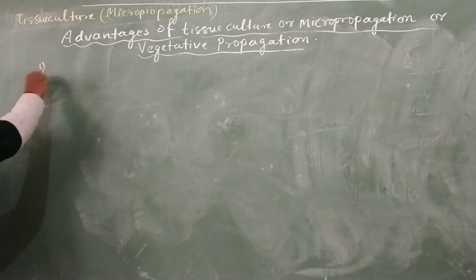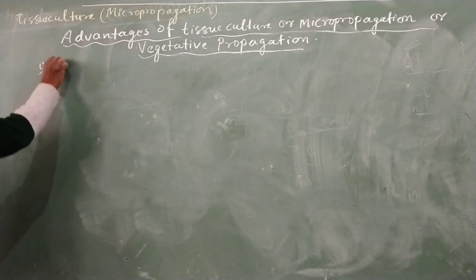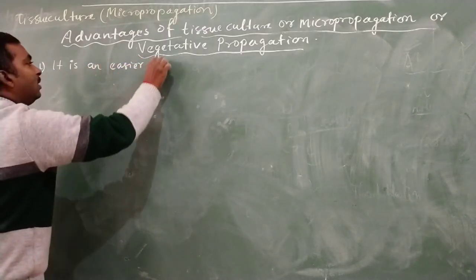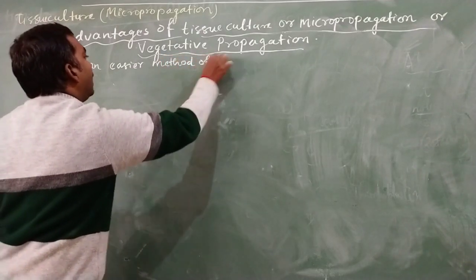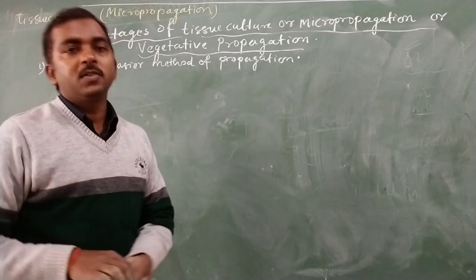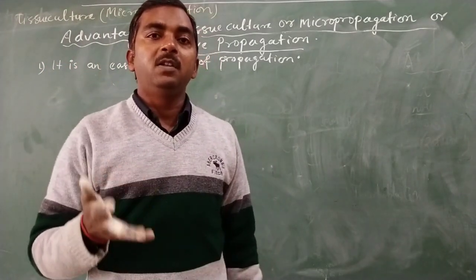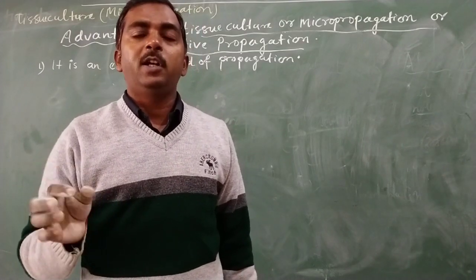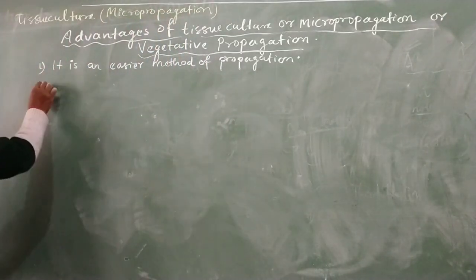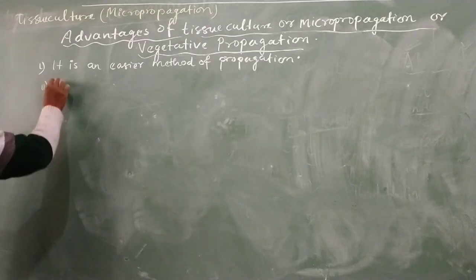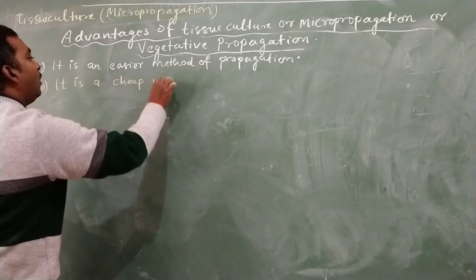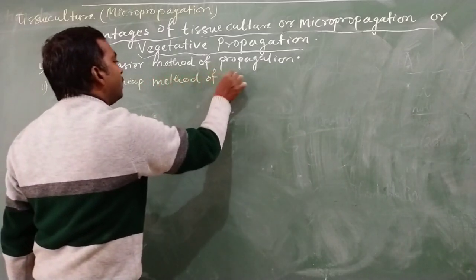The first advantage of vegetative propagation is that it is an easier method of propagation. Propagation done vegetatively can be carried out easily — there is no extra or advanced technique required for vegetative propagation. The second advantage is that it is a cheap method of growing new plants.